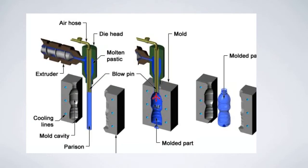جو plastic heat ہو کر melt ہو چکی ہے وہ mold کے اندر آ جاتی ہے۔ نیچے dies، cooling lines، اور mold cavity آپ دیکھ سکتے ہیں۔ Parison جو semi-solid structure ہے، اس میں blow pin کے ذریعے air fill ہوتی ہے۔ Air fill ہونے کے بعد وہ die کا shape لے لیتا ہے۔ Final product میں آپ دیکھ سکتے ہیں کہ bottle بن چکی ہے۔